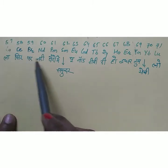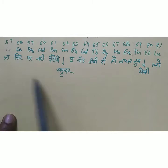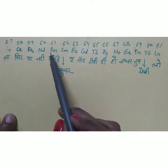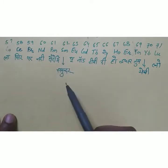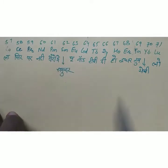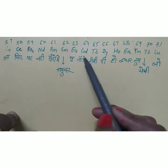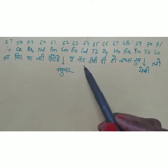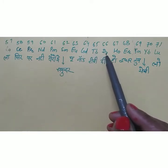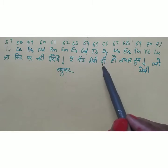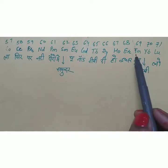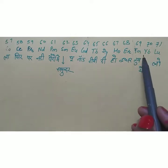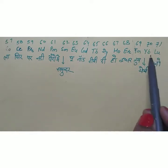Continuing the mnemonic: 'La, ce, par, nadi, par yarni samundar' — 'paron mein' means promethium, 'samundar' means samarium (Sm). Then 'U' means europium (Eu), 'god' means gadolinium (Gd), 'TB' means terbium (Tb), 'di' means dysprosium (Dy), 'ho' means holmium (Ho), 'idhar' means erbium (Er), 'tum' means thulium (Tm), 'yabhi' means ytterbium (Yb), 'lo' means lutetium (Lu).